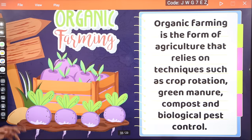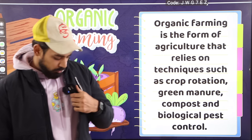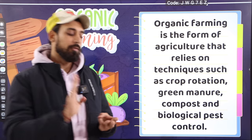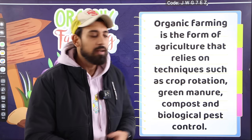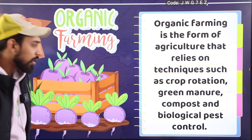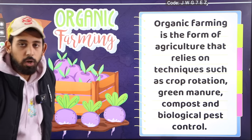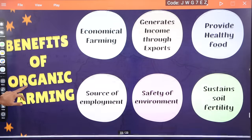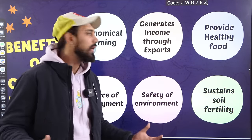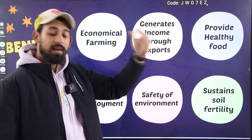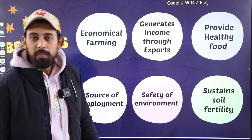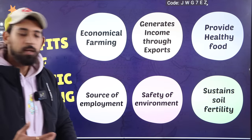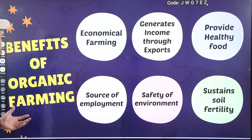Organic farming means completely chemical-free farming — no chemical fertilizer, no chemical pesticide, no chemical insecticide. It relies on techniques like crop rotation, green manure, compost, and biological pest control. Benefits include being economical (no chemical inputs to buy), generating export income due to demand for healthy food, creating employment, protecting the environment, and maintaining soil fertility.